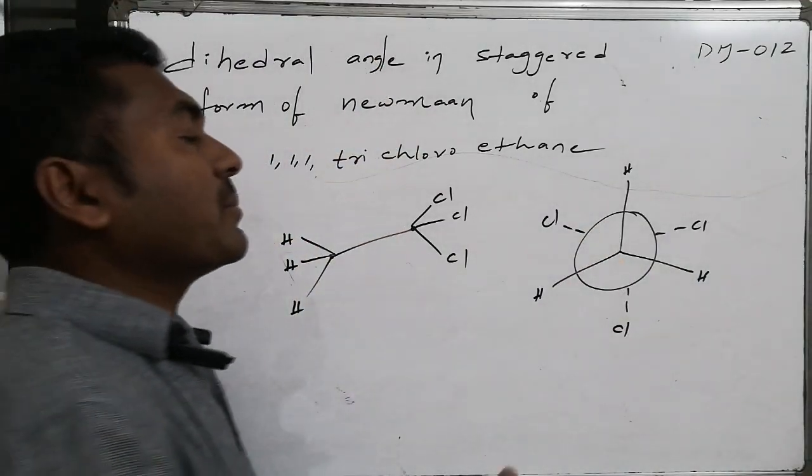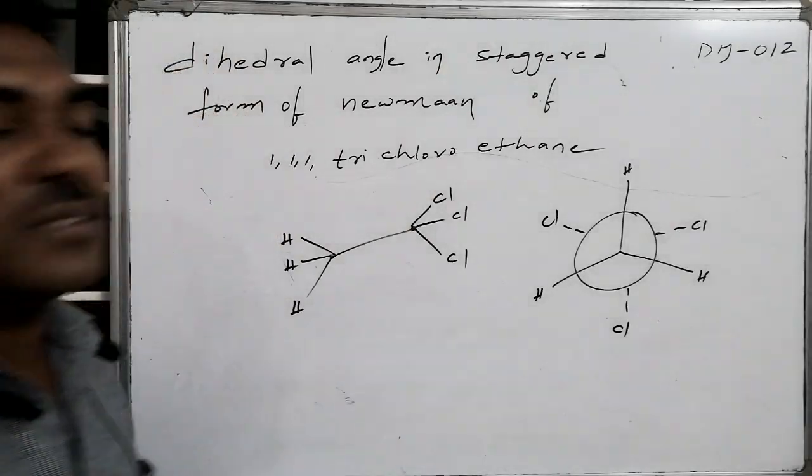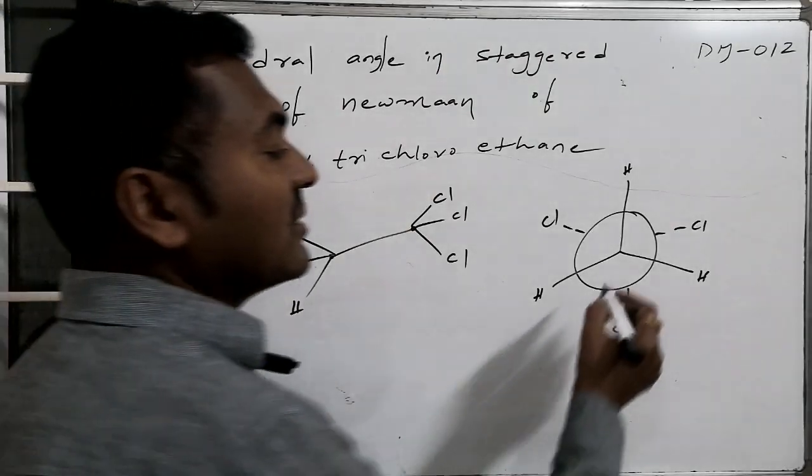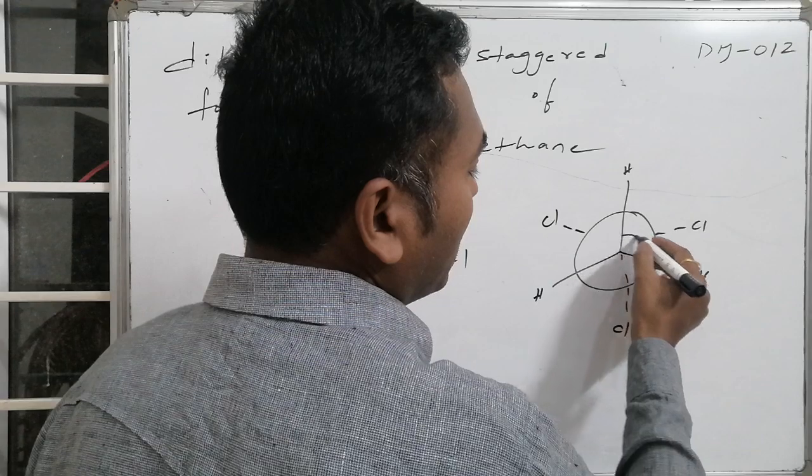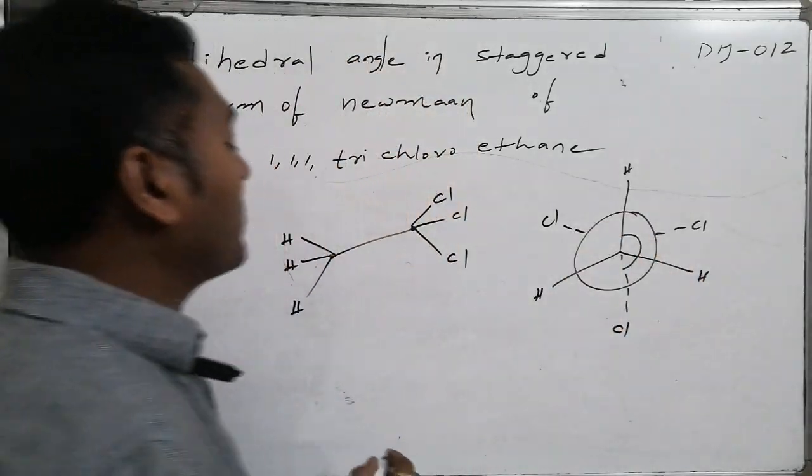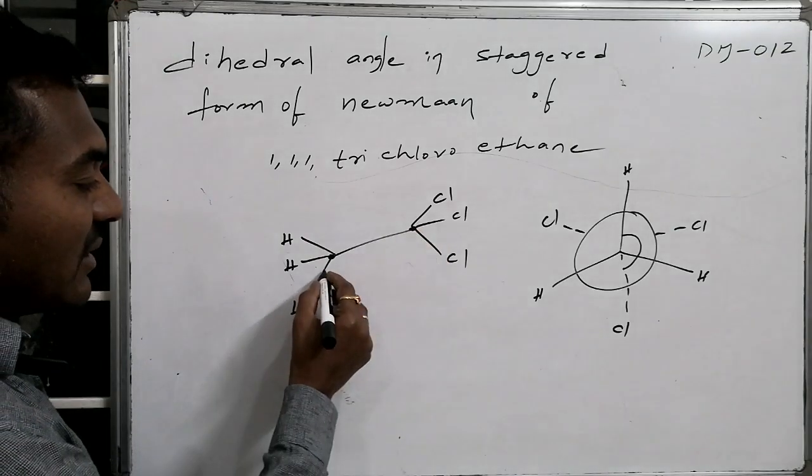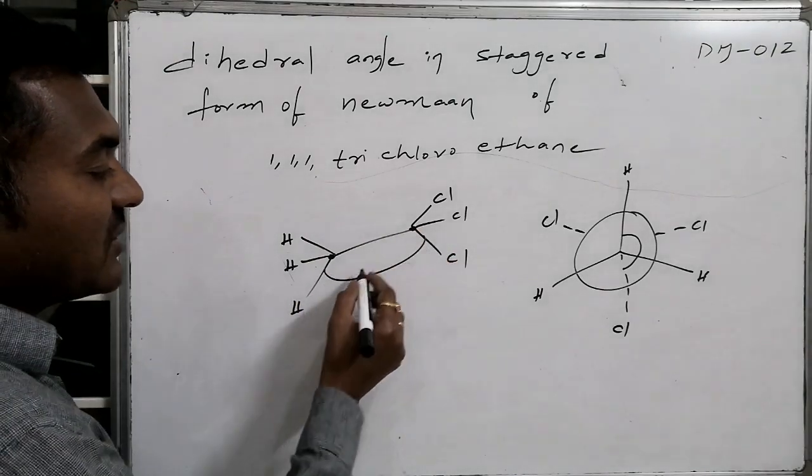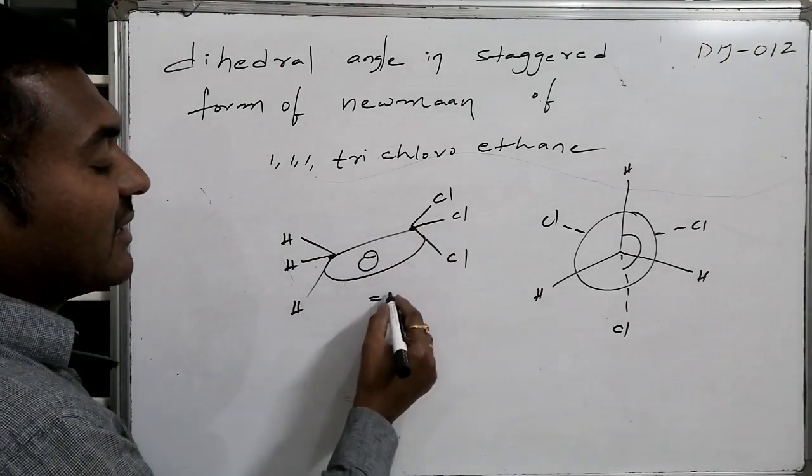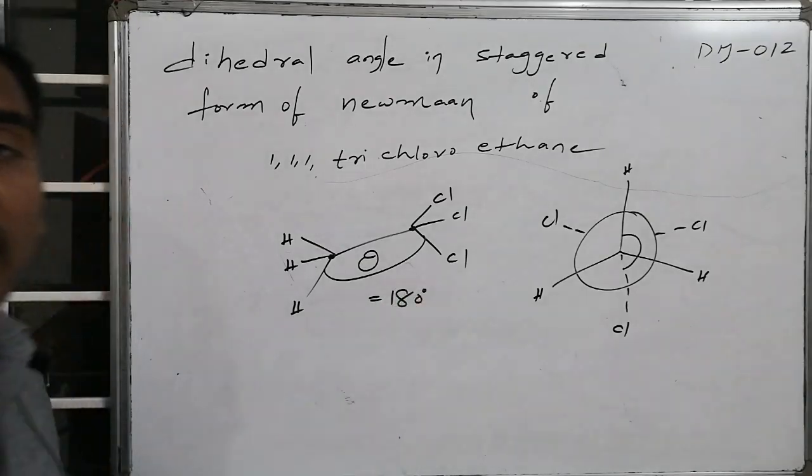In order to maintain minimum repulsions in the staggered conformation, which is known as anti-conformation, this angle - from here to here, from front carbon atom to back carbon atom - that is, from this carbon atom to this carbon atom, this angle is said to be the dihedral angle. That dihedral angle is found to be 180 degrees.